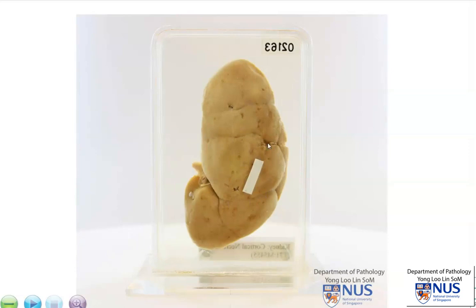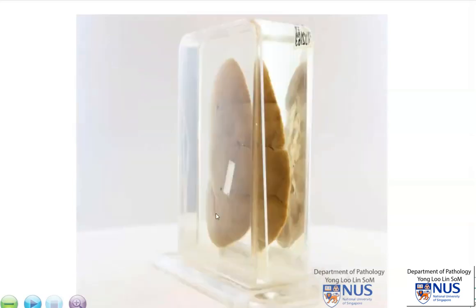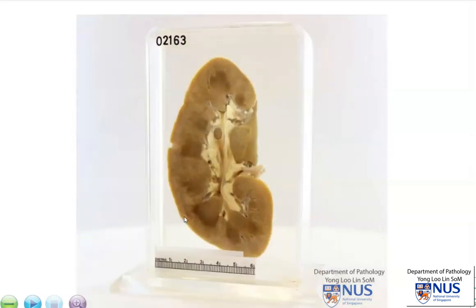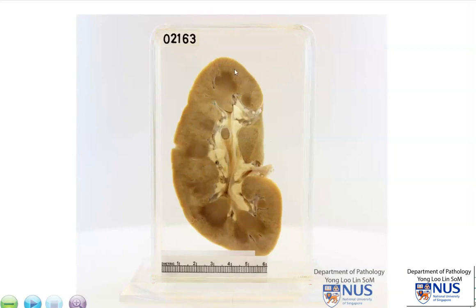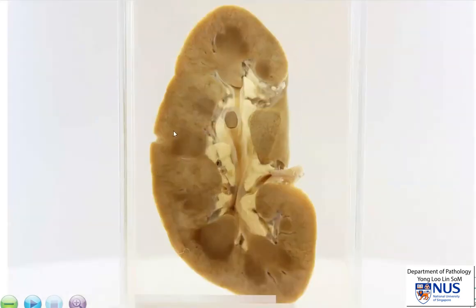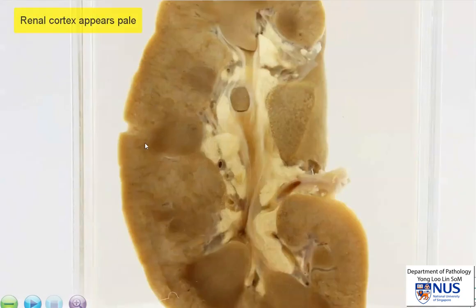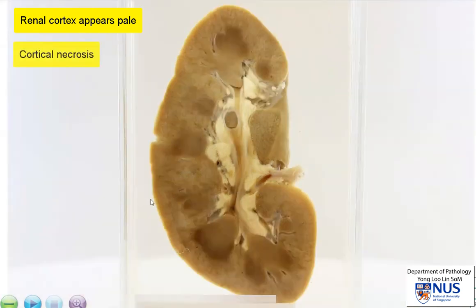This kidney is an adult kidney, but it has retained some of the fetal lobulations. The abnormality here lies in the renal cortex. We can appreciate that the cortex is actually quite pale in color in contrast with the medullary pyramids, and this is because there is diffuse cortical necrosis. This necrosis extends into the columns of Bertin.